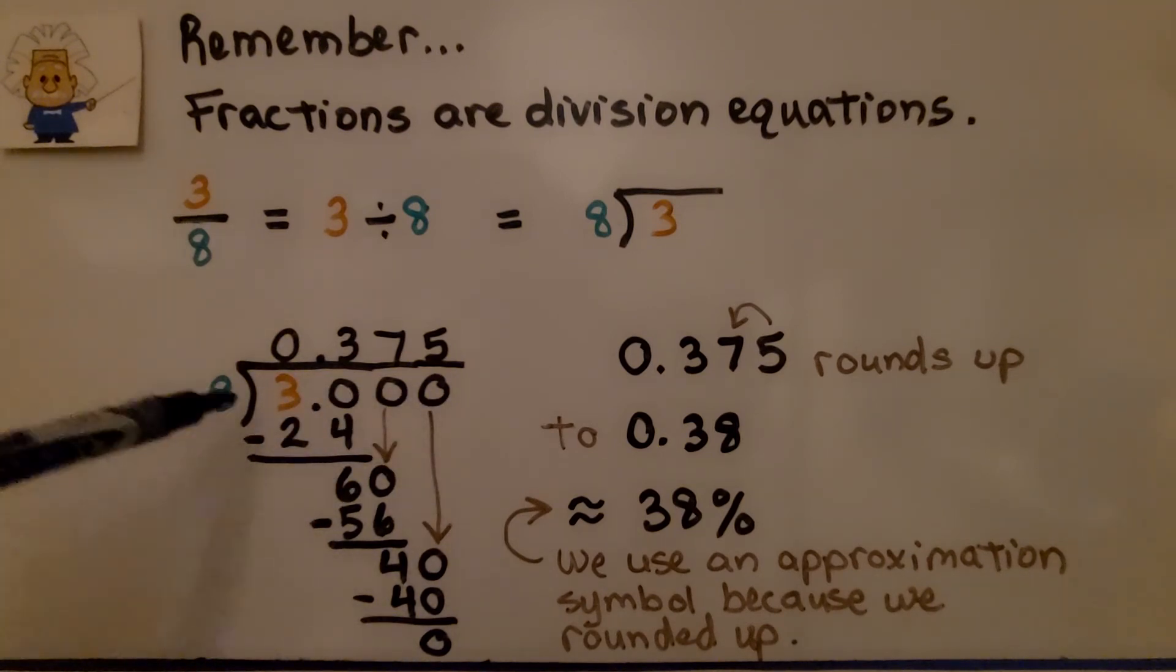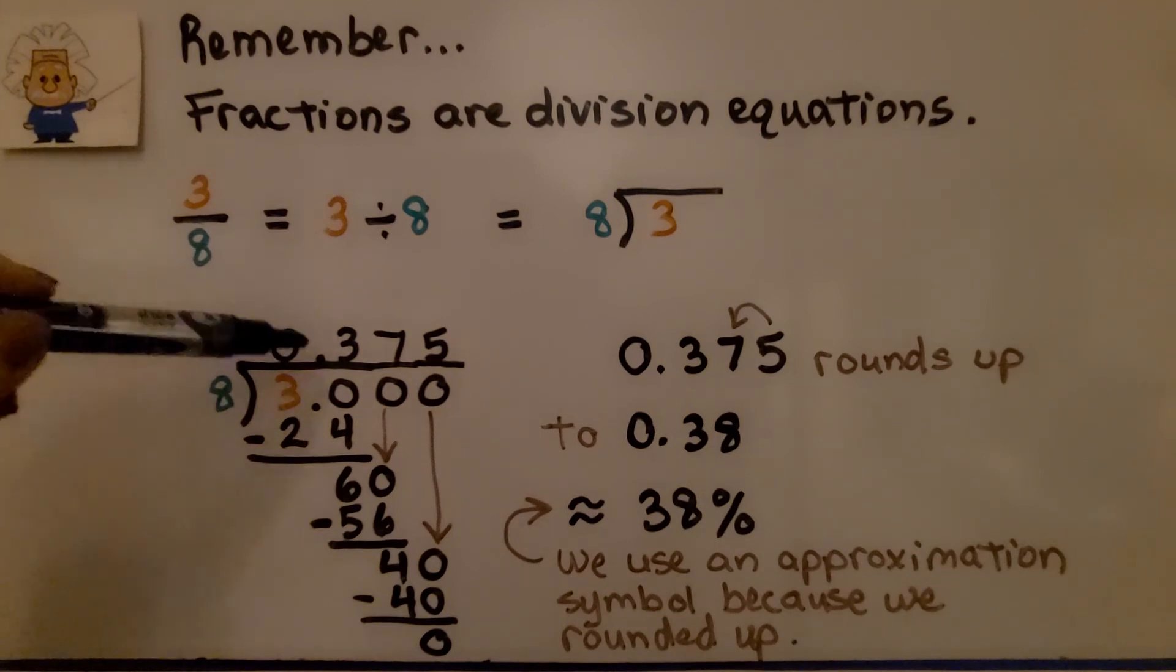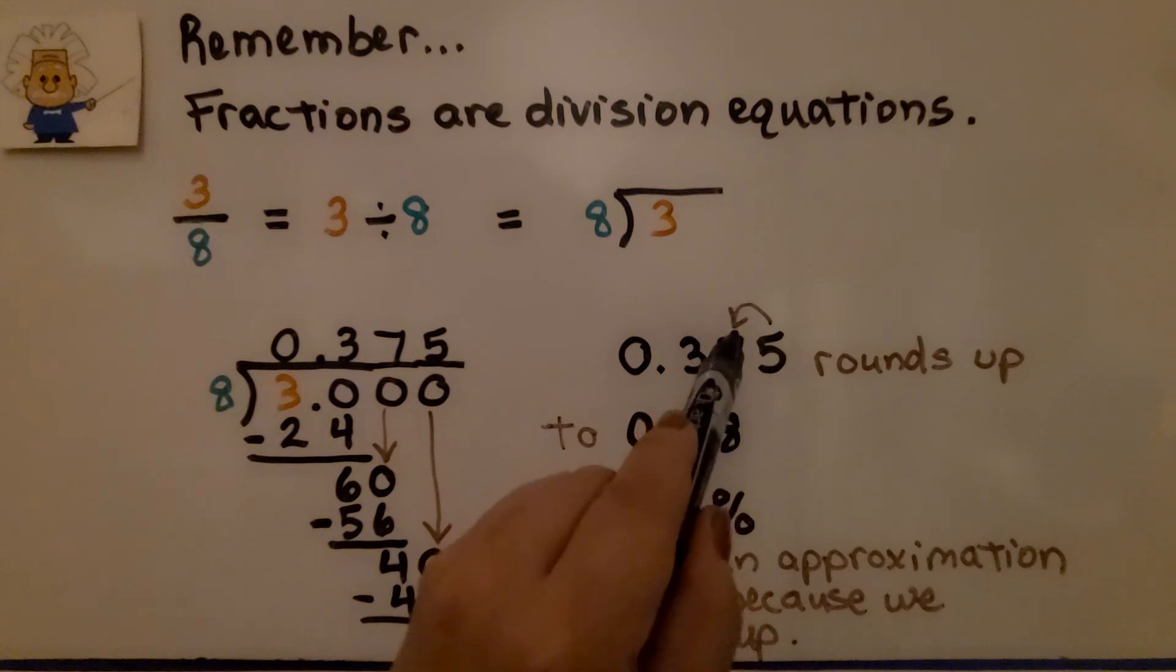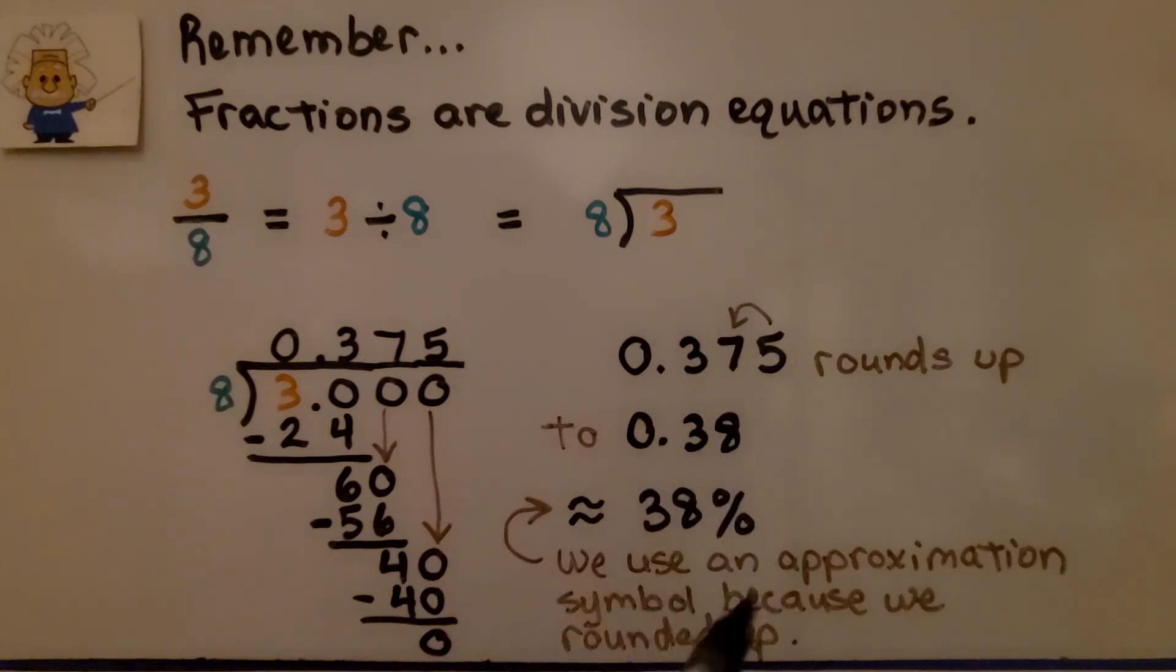And after doing our long division, we see that it's equal to 0.375 as 375 thousandths. To write this as a percent, we need to round up. This 5 tells the 7 to round up to an 8. So we've got approximately 38%. We use an approximation symbol because we rounded up.